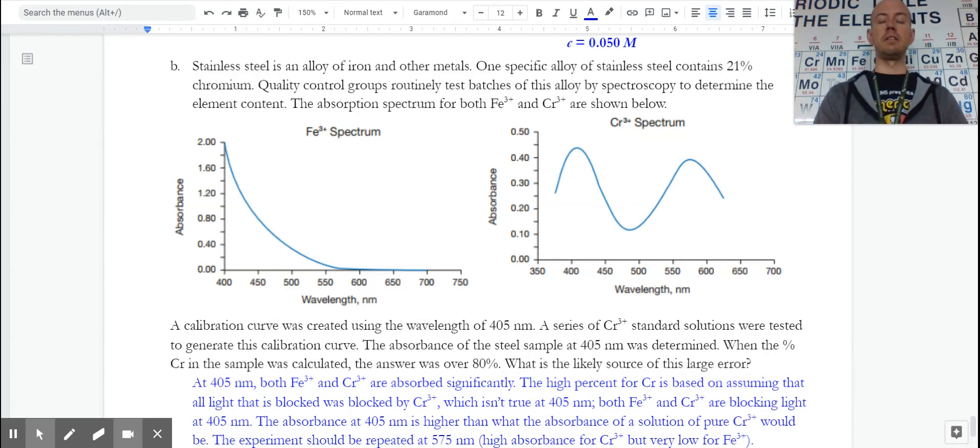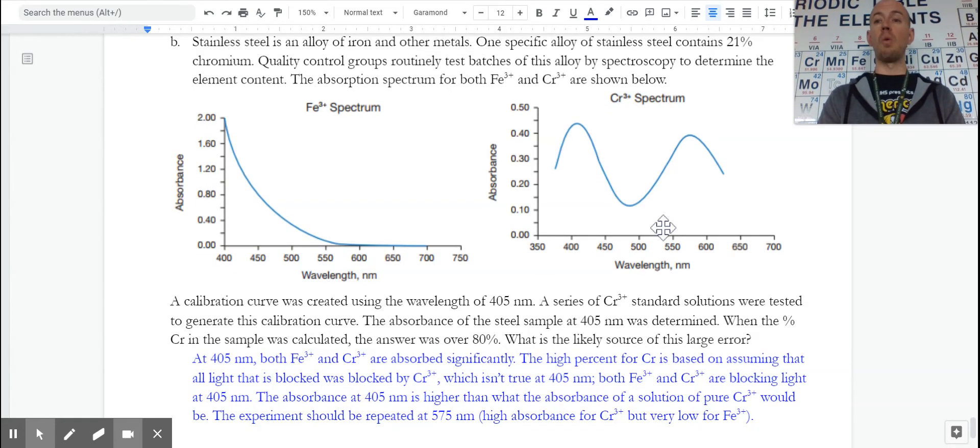In this example, we've got an absorbance spectrum from both of them. We ran the test to see how much copper should be in there. The copper should have been 21%, but it was actually way over. When we look at what was done, the sample that they used for chromium had a fairly high absorbance. Chromium absorbs pretty well at 400 nanometers. It also absorbs very well around 550 to 600 nanometers.